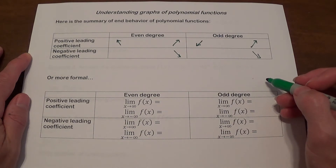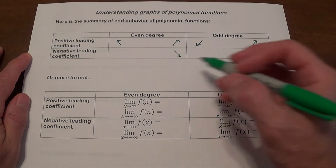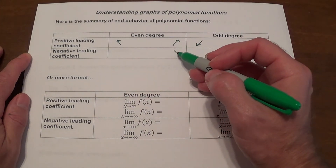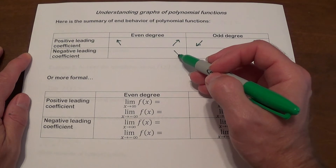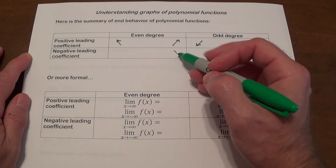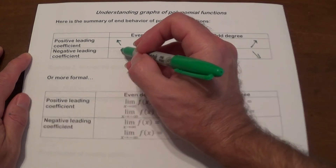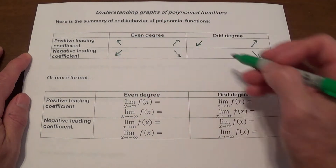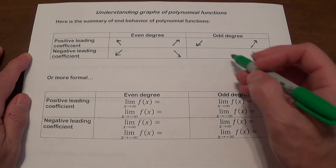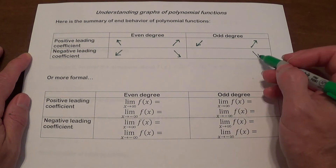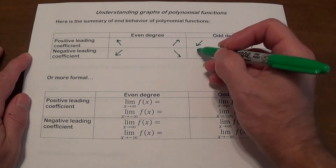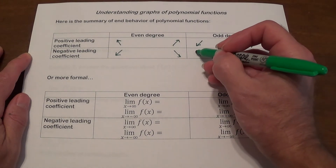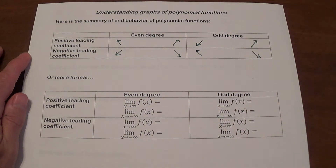What about the negative leading coefficient? If the degree is even, we already know the right end goes down, so the left end is also going to go down. And if the degree is odd, since the right end goes down, the left end goes up.